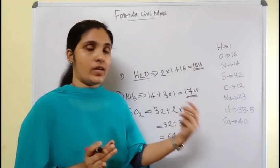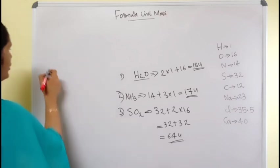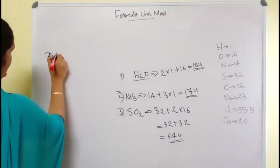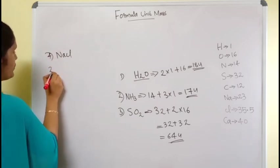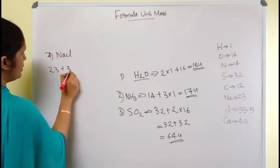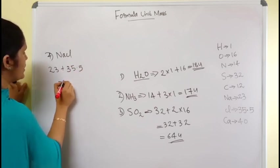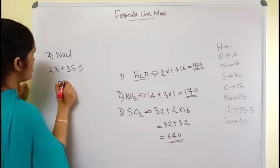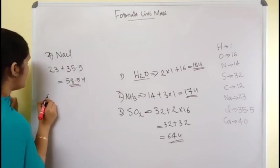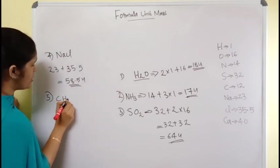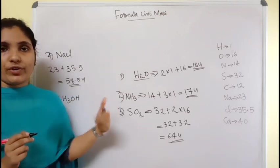The fourth compound is NaCl, sodium chloride. Sodium's atomic mass is 23 and chlorine's is 35.5. Adding them: 23 + 35.5 = 58.5 u. So the formula unit mass of NaCl is 58.5 u.